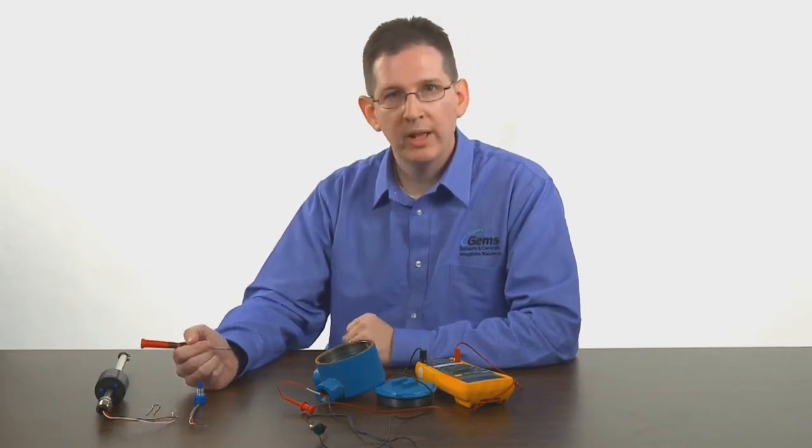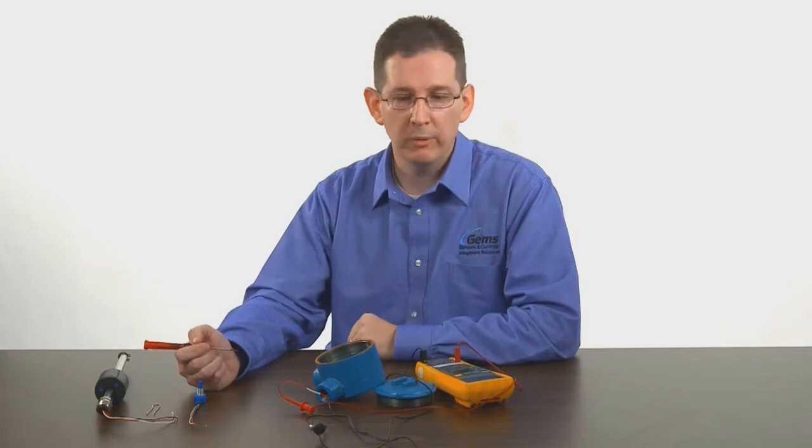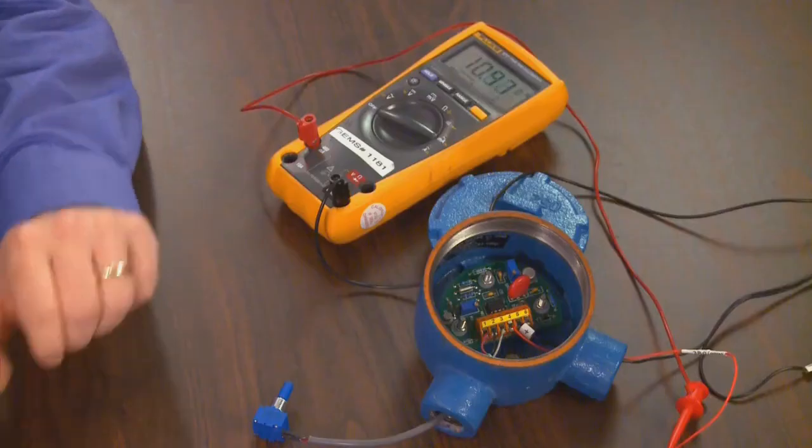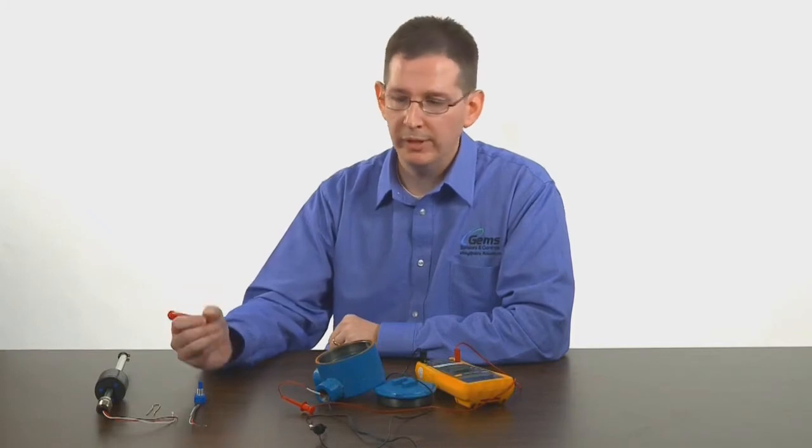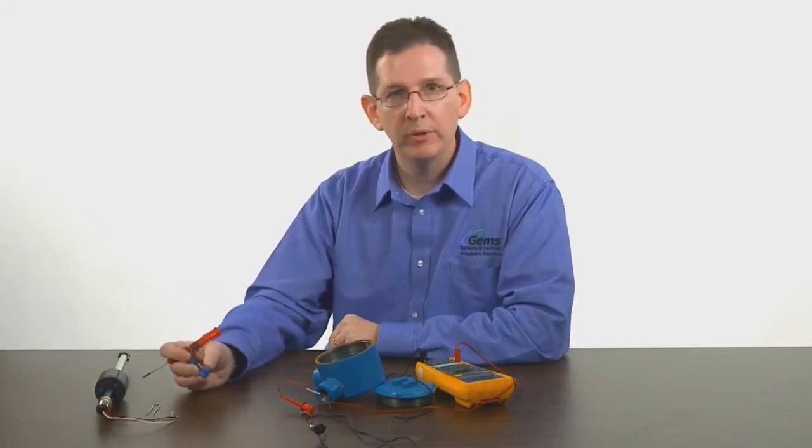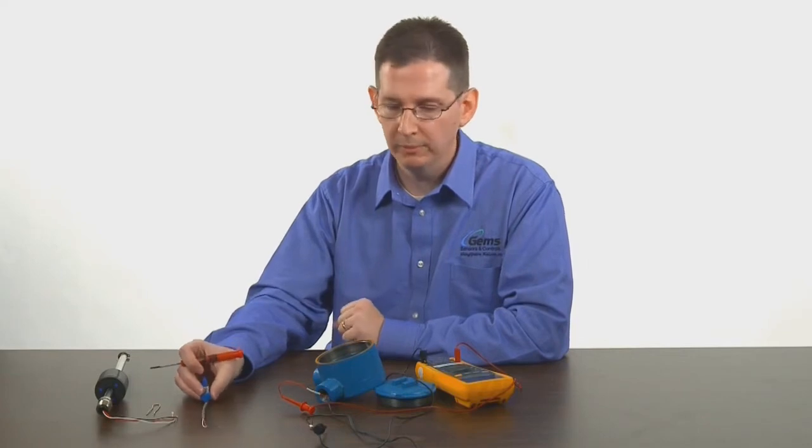To do the calibration what you'll need is a 24 volt power supply DC voltage, a multimeter, a screwdriver or tweaker, and a potentiometer in the range of 1000 ohm to 2500 ohm.